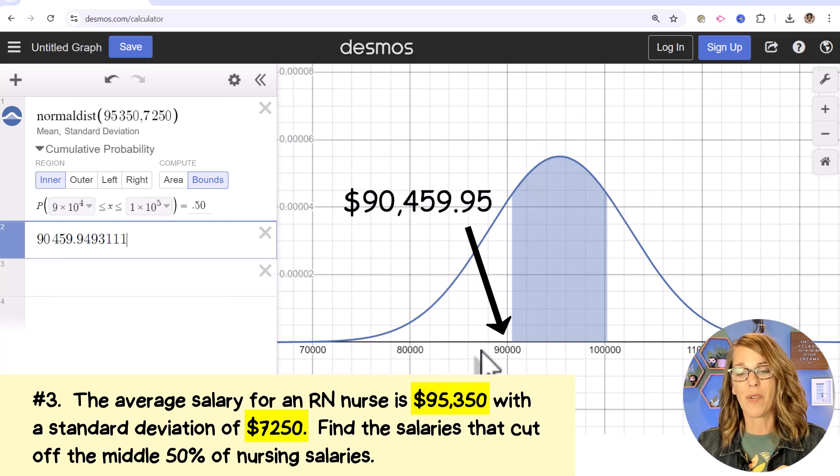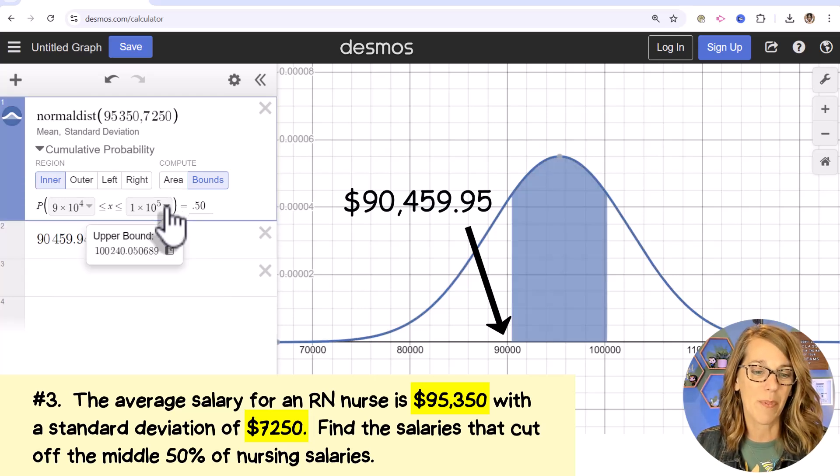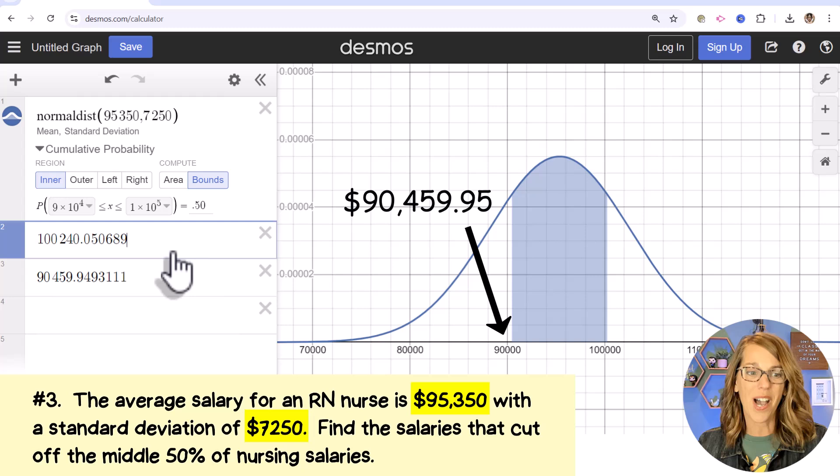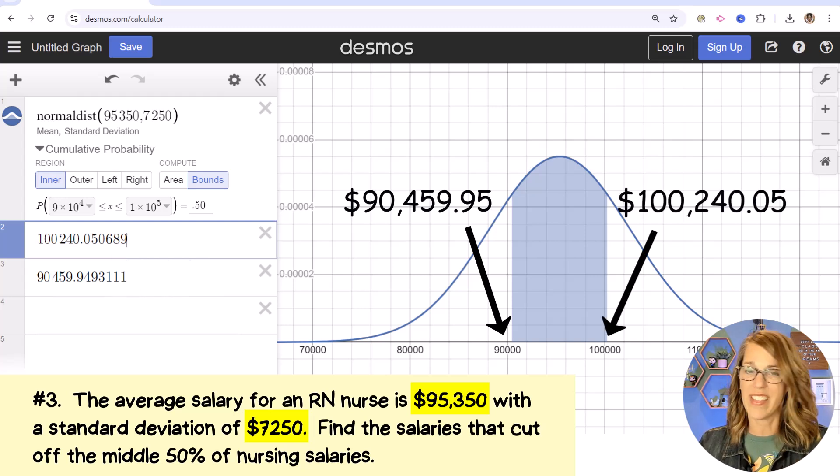So that would be my lower bound that's right over here. And then my upper bound, let's click the down arrow for this upper bound. And I'm going to also copy this in so I can get a better view. That's going to be $100,240.05.